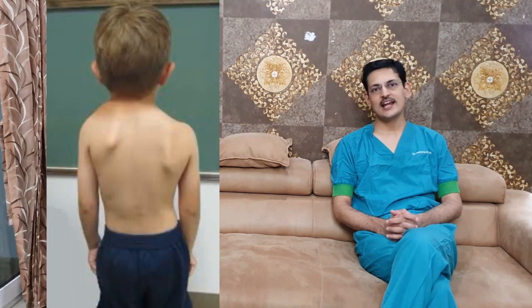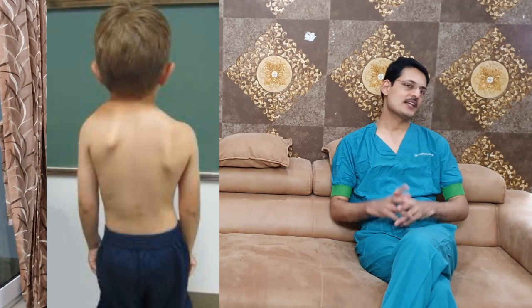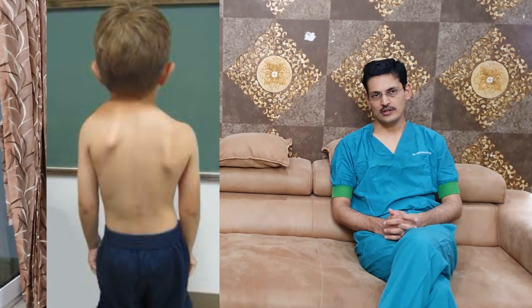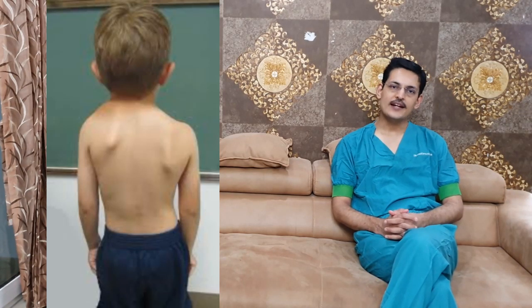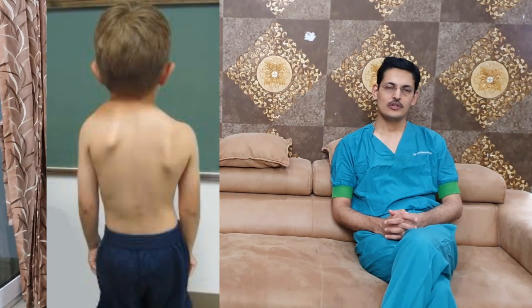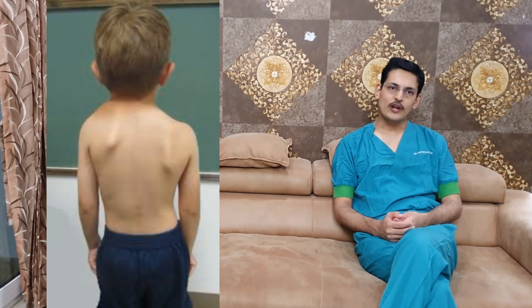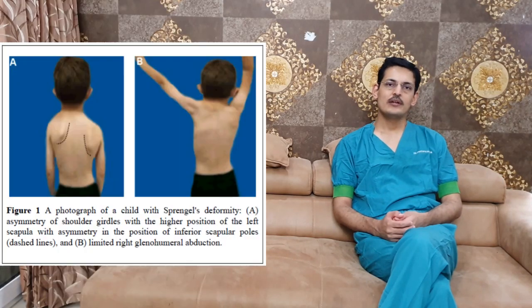Good morning friends. Today we will be talking about Sprengel's shoulder. Sprengel's shoulder is the most common congenital shoulder or scapular abnormality. Sprengel's shoulder is a congenital condition which is caused due to improper descent of the shoulder, so it is also called as a congenital elevation of the shoulder.